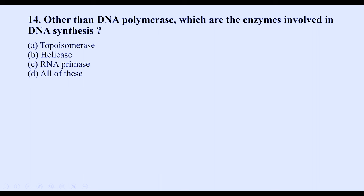Question fourteen asks which enzymes, other than DNA polymerase, are involved in DNA synthesis. Topoisomerase releases tension in the strands at the replication fork. Helicase unwinds the double helix. RNA primase synthesizes the RNA primer. All three are involved alongside DNA polymerase, so the correct option is D — all of the above.